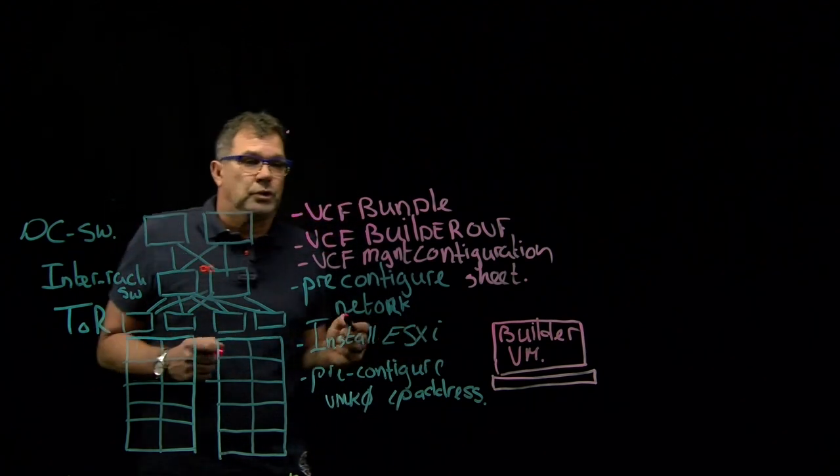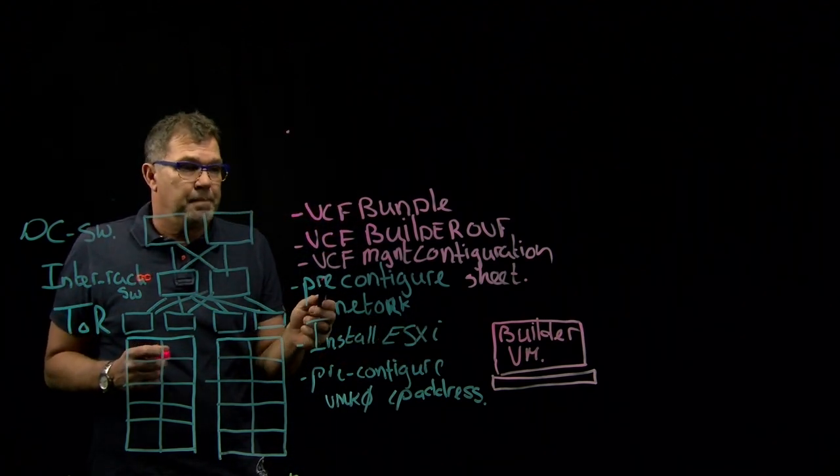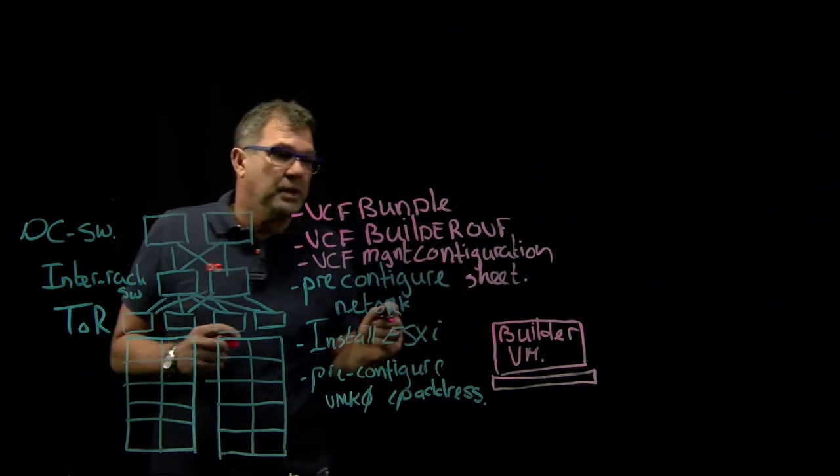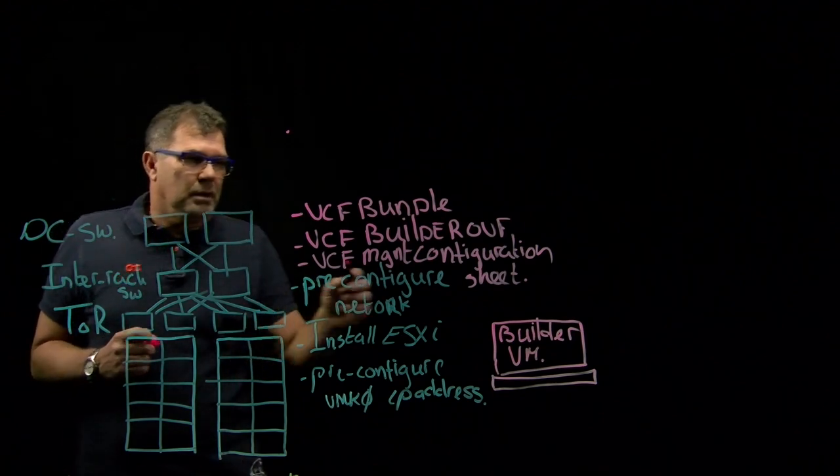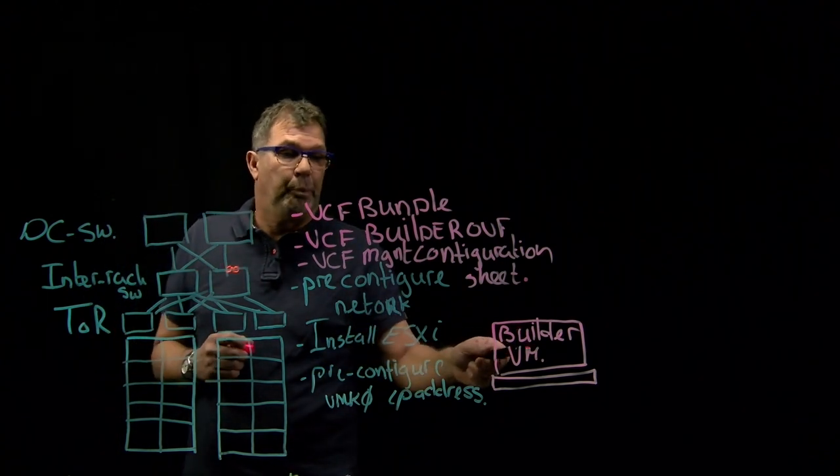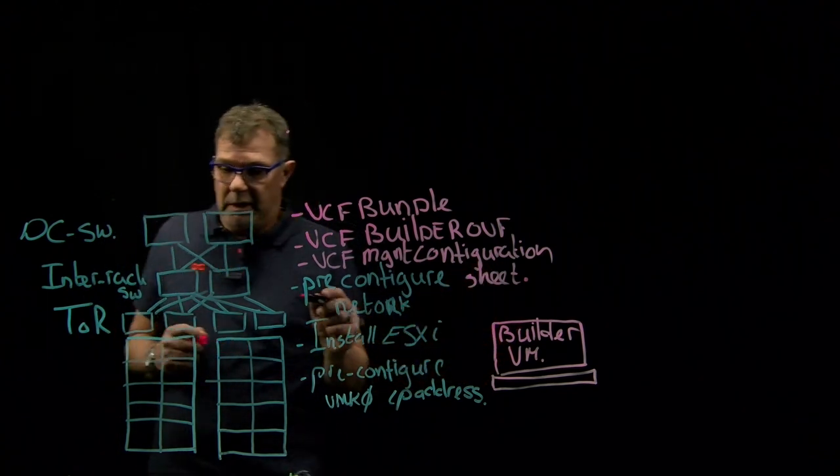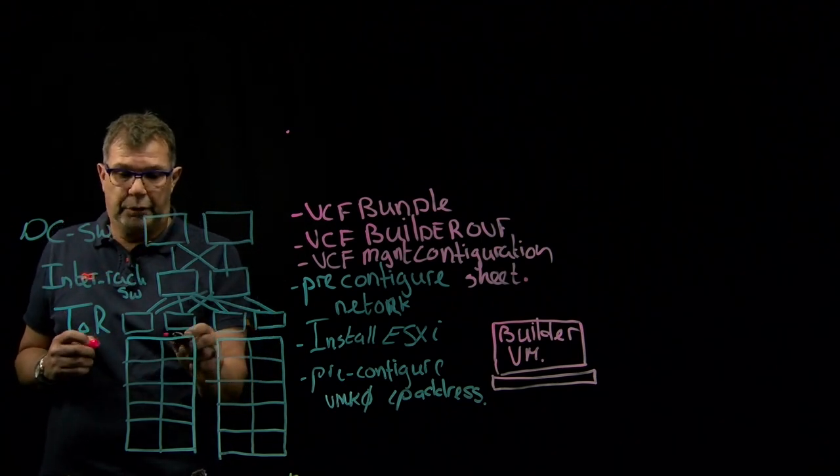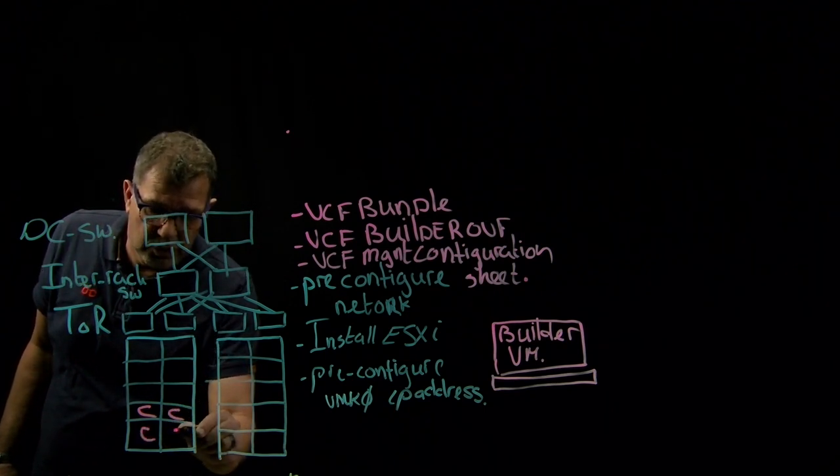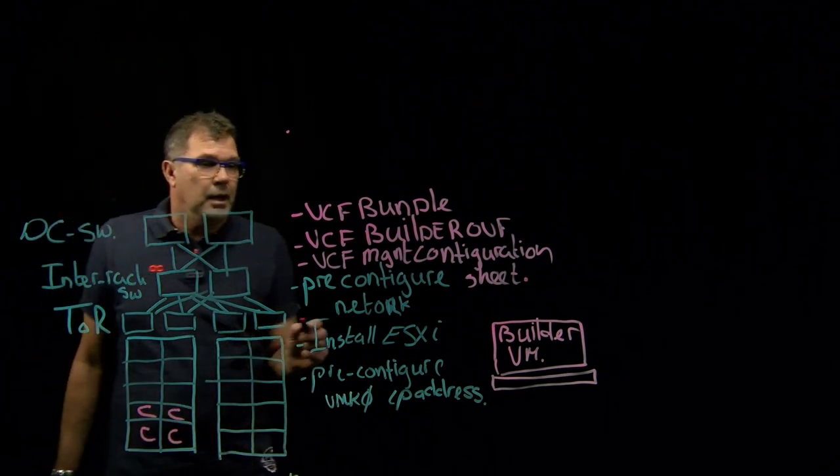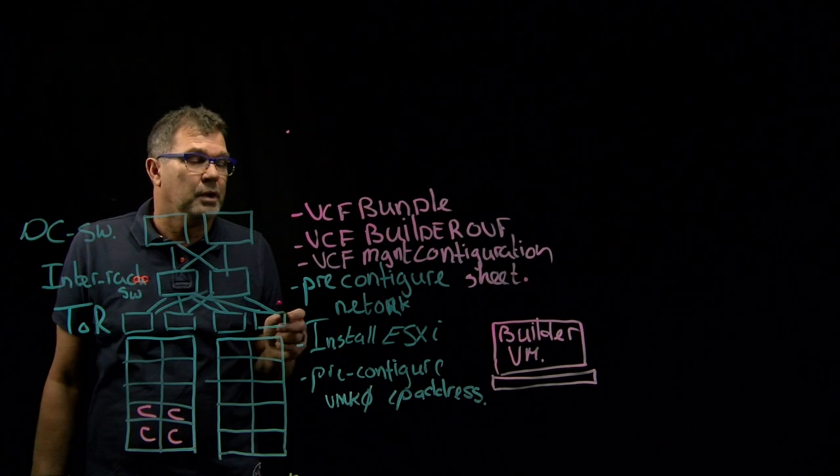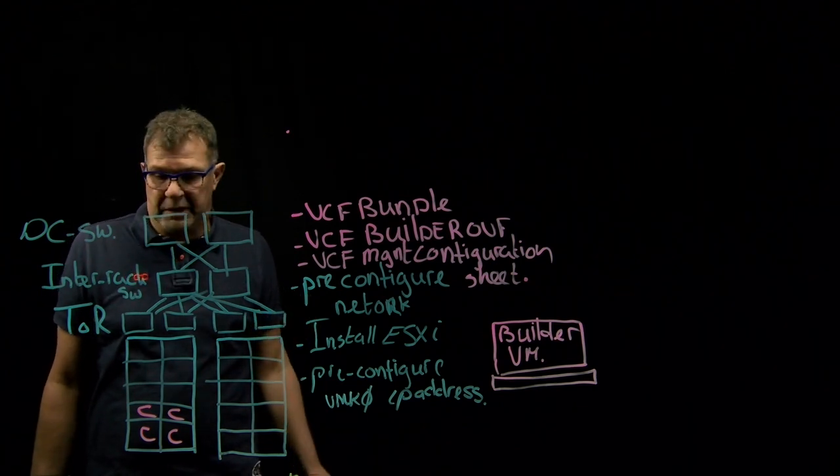To install the management domain you have to fill in your VMware management configuration sheet with necessary information for networking and naming. You start your Builder VM, point to your management configuration sheet, and choose the right hardware. For a minimum you need four nodes. The Builder VM will start with the basic installation of your VMware Cloud Foundation management domain.